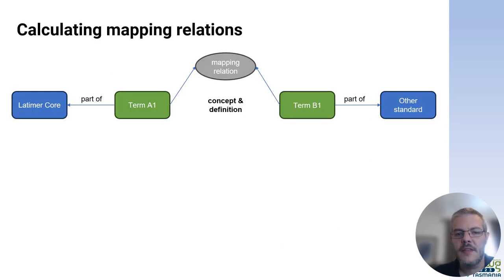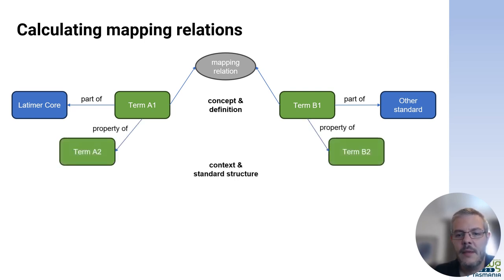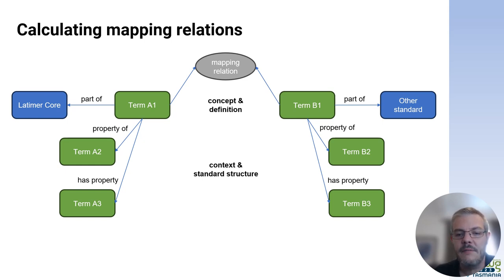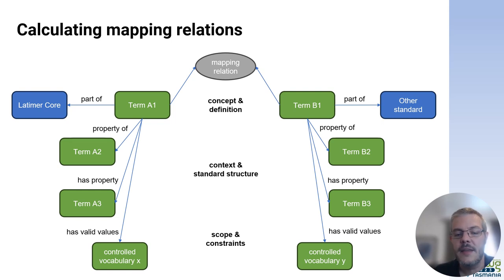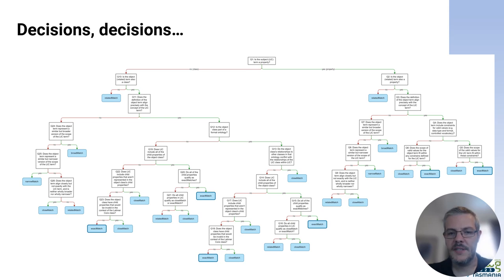Once you get your head around those five categories, things initially seem quite straightforward — until you get into the process of working out which category each mapping should be, which is where the pain really starts. There are a whole host of factors involved in making that decision: comparing the definition and general concept of the two terms, which takes a degree of judgment and interpretation; structural elements such as whether both terms are simple properties or complex classes; if they're classes, whether they have the same set of child properties; whether there are model relationships around the term that affect alignment; and whether either or both terms have a controlled vocabulary or other constraints, and if so, whether they're the same on both sides.